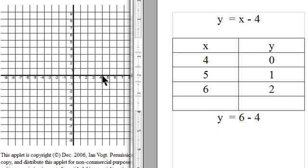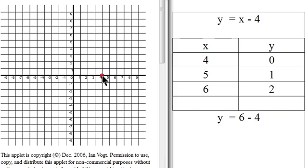And I just graph these points over here. So there's 4, 0, 5, 1 is right here. And if we want to check it, 6, 2 is right there, so we know we're right. Okay, I hope this helps. Bye.